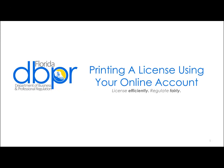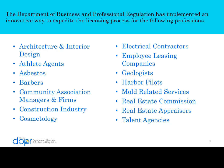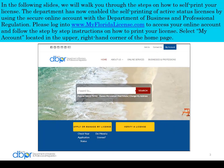Printing a license using your online account. The Department of Business and Professional Regulation has implemented an innovative way to expedite the licensing process for various professions. In the following slides we will walk you through the steps on how to self-print your license. The department has now enabled the self-printing of active status licenses by using the secure online account with the Department of Business and Professional Regulation. Please log in to www.myfloridalicense.com to access your online account and follow the step-by-step instructions on how to print your license.